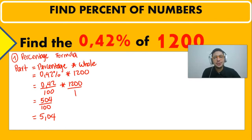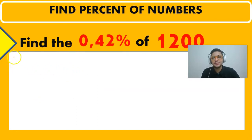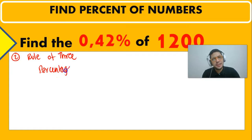What about using the rule of three? So whenever we're using the rule of three, we can think of the percentages and the amounts, right?